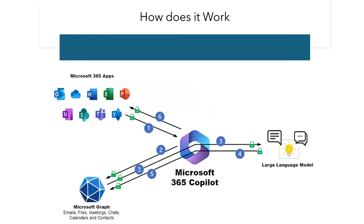So how does Copilot work? Typically, you're starting out in a Microsoft Office application like Word, Excel, or PowerPoint. As you can see from this Microsoft diagram, you're making a request in that application, which goes out to Copilot, which then checks your individual Microsoft Graph — Microsoft's understanding of the files and information that your specific license gives you access to. Once it identifies the documents you're allowed to access, it goes out to the large language model and then back to your application with the information you need.